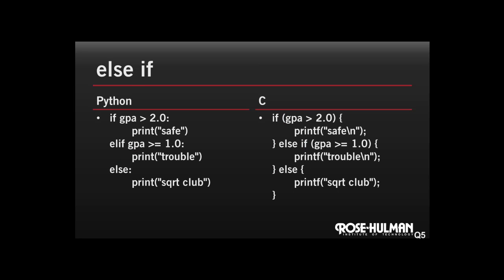Now here's an else if statement in Python and in C. And again, take a look at this and see if you can see the differences. Some of you might wonder what square root club means here. Well, square root is for those students whose square root of their GPA is actually greater than their GPA. That means their GPA is below what? Yeah, below 1.0.